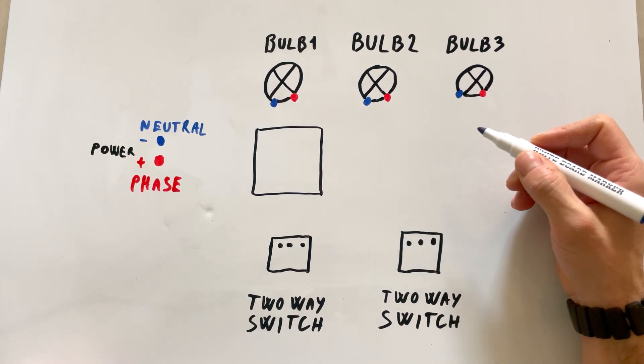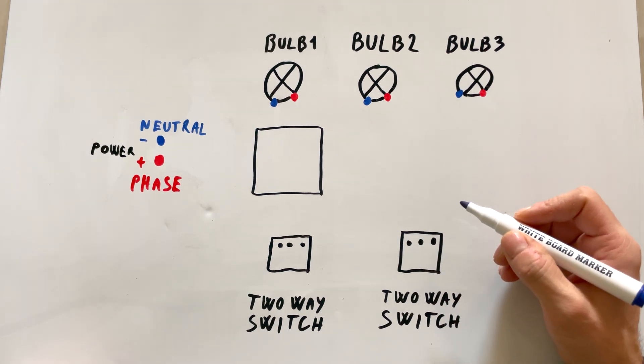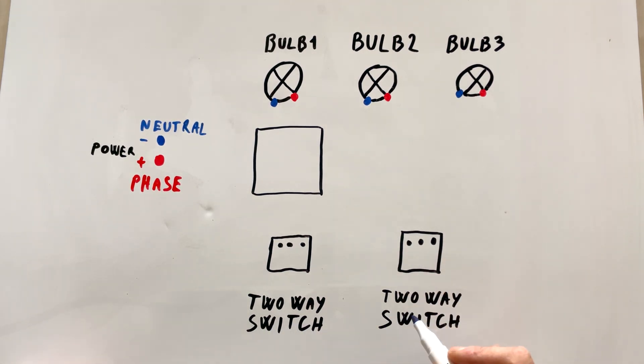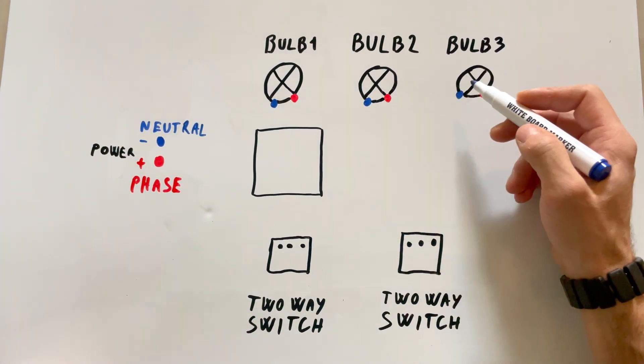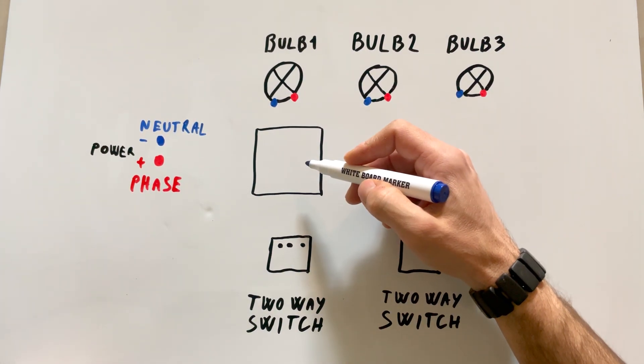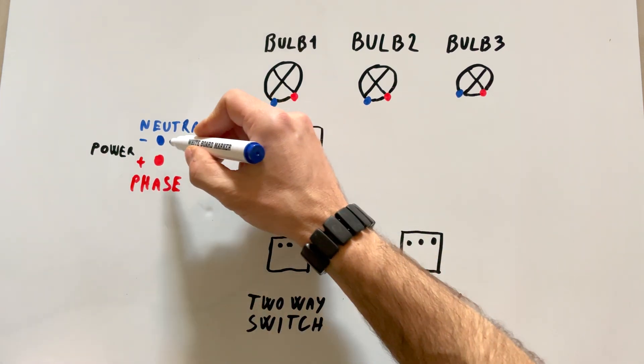Hi, I'm Ferry from BFJ Electric. In this video, I'll show you the wiring diagram for a two-way or three-way switch connecting one, two, or three bulbs in a junction box. Let's see how to connect them to make the bulbs work.